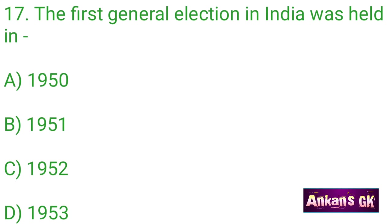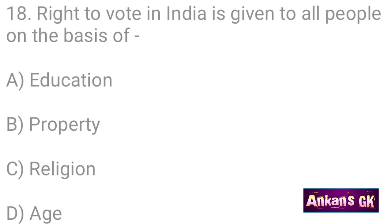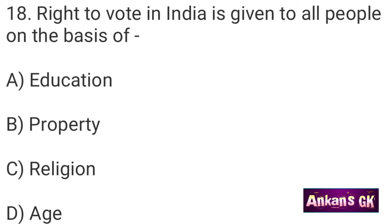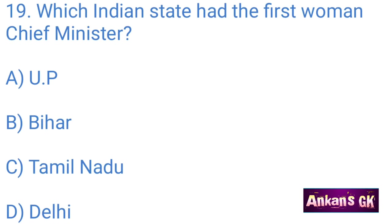The first general election in India was held in — the answer is B: 1951. Right to vote in India is given to all people on the basis of — the answer is D: age.